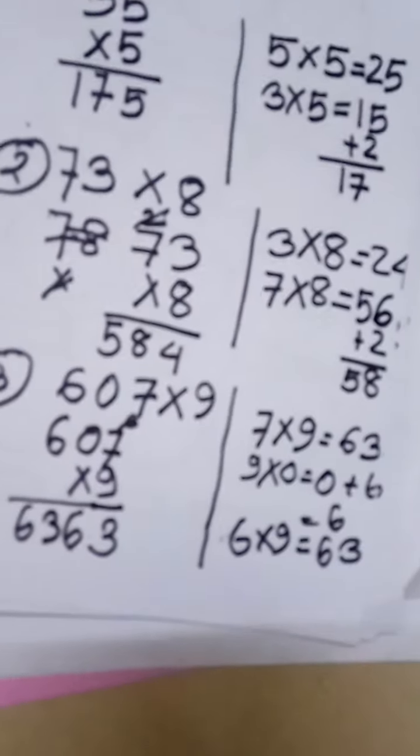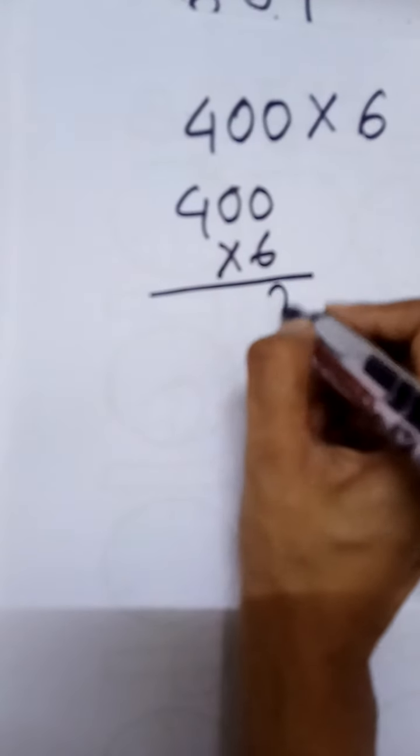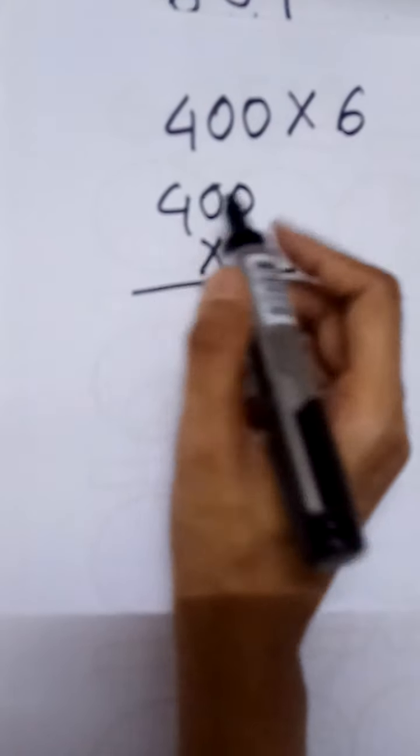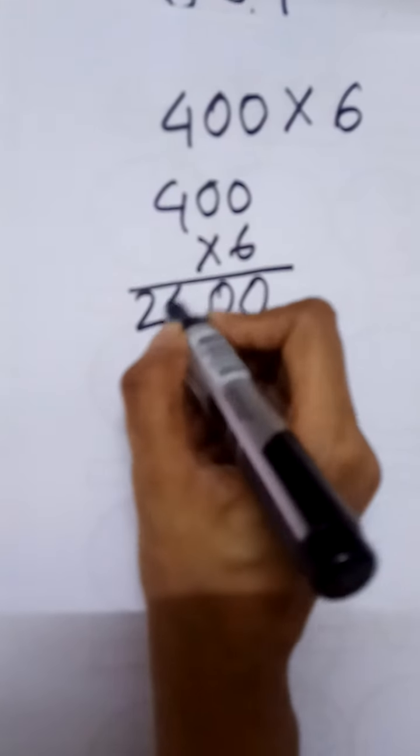We are going to solve another one. 400 multiply by 6. First, we have to write it vertically. 400 times 6. 0 times 6 equals 0, 0 times 6 equals 0, 4 times 6 equals 24. The answer is 2,400.